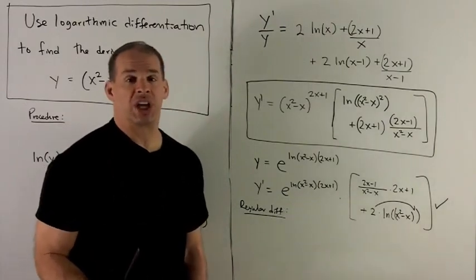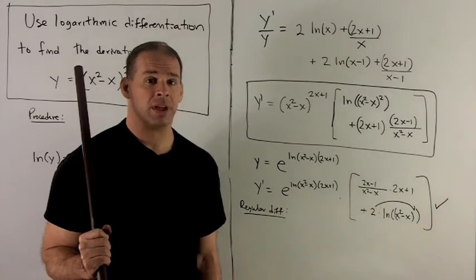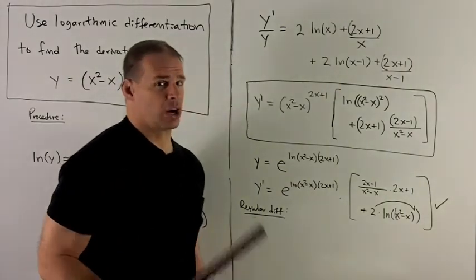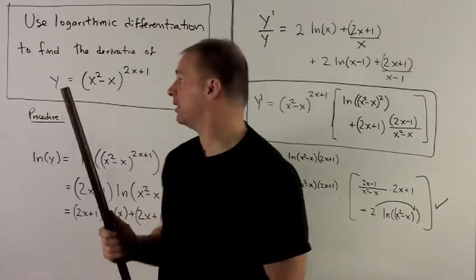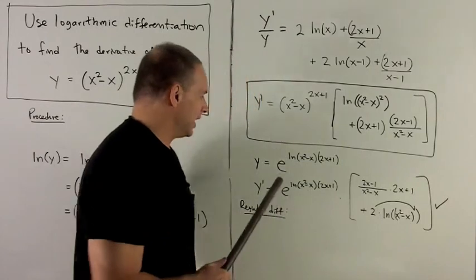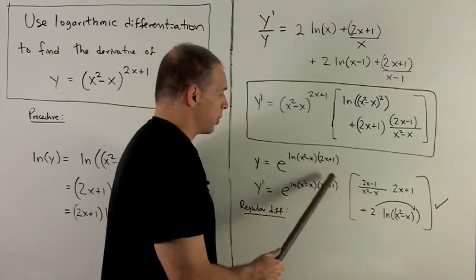Okay, we can definitely check this, because we can do this derivative without any logarithmic differentiation. So let's check that. Okay, my favorite trick to start this, I don't like having funny things for the base, so I rewrite this as e to the natural log of the base times the exponent that I had.